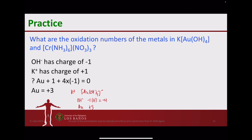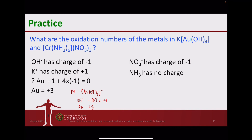For the second example, the counter ion is nitrate, which is minus one. There are three nitrates, each negative one. Ammonia is a neutral molecule with a charge of zero — even though there are six of them. The coordination compound overall is zero. So the oxidation number of chromium plus six ammonia (zero each) plus three nitrates (minus one each) must total zero, which means chromium has an oxidation number of plus three.